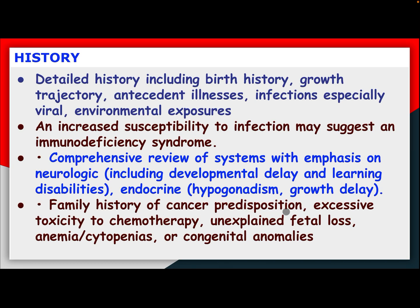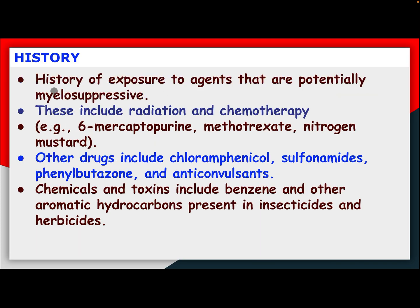Family history of cancer predisposition, excessive toxicity to chemotherapy, unexplained fetal losses, anemia, cytopenia, or congenital anomalies should be obtained. History of exposure to potentially myelosuppressive agents includes radiation; chemotherapy like 6-mercaptopurine, methotrexate, nitrogen mustard; and other drugs including chloramphenicol, sulfonamide, phenylbutazone, and anticonvulsants.